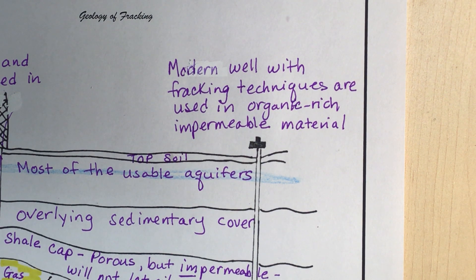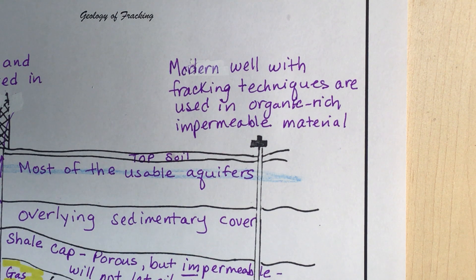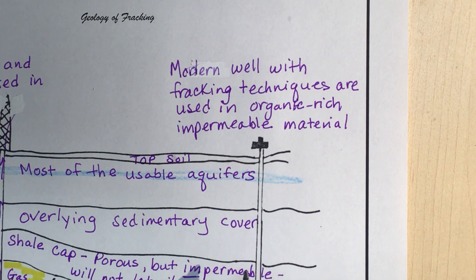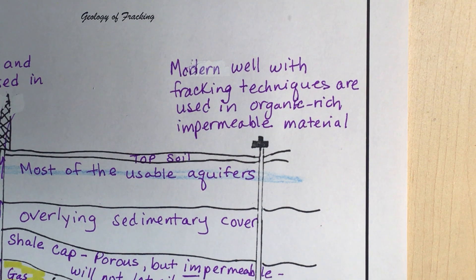This is a new technology that has vastly opened up fossil fuel resources in the United States and other places. One reason coal is being phased out and natural gas is replacing it for electricity is that we can now extract a huge amount of natural gas through fracking. We can also extract oil through fracking in oil shale, but most of the fracking being done in the country right now is for natural gas.